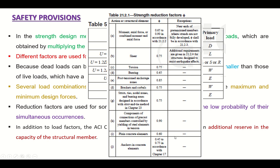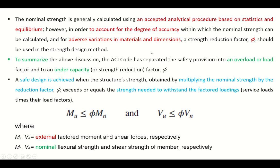Why is this so? Because the flexural behavior is known much more accurately than the shear behavior, and these reduction factors are simply based on that thing. So the nominal strength is generally calculated using an accepted analytical procedure based on statics and equilibrium. However, in order to account for the degree of accuracy within which the nominal strength can be calculated and for adverse variations in materials and dimensions, a strength reduction factor phi should be used in the strength design method.